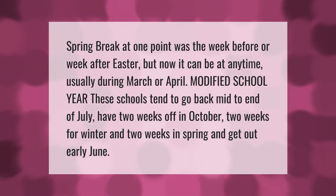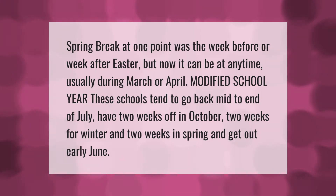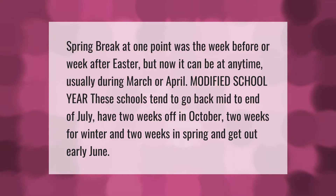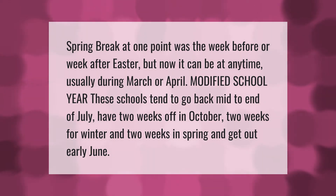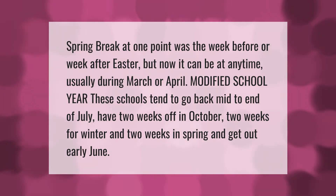Spring break at one point was the week before or after Easter, but now it can be at any time, usually during March or April. Modified school year schools tend to go back mid to end of July, have two weeks off in October, two weeks for winter, and two weeks in spring, and get out early June.